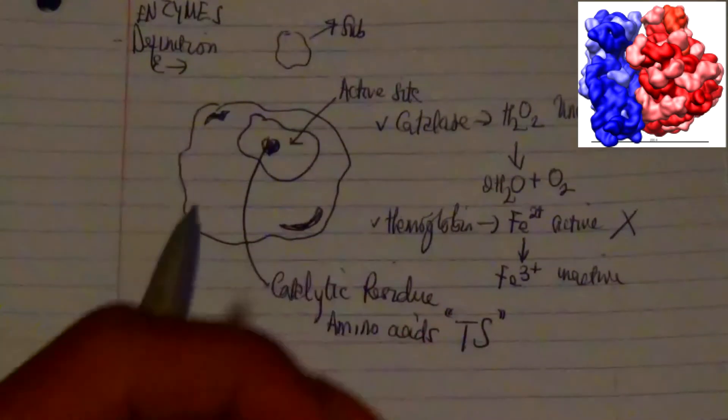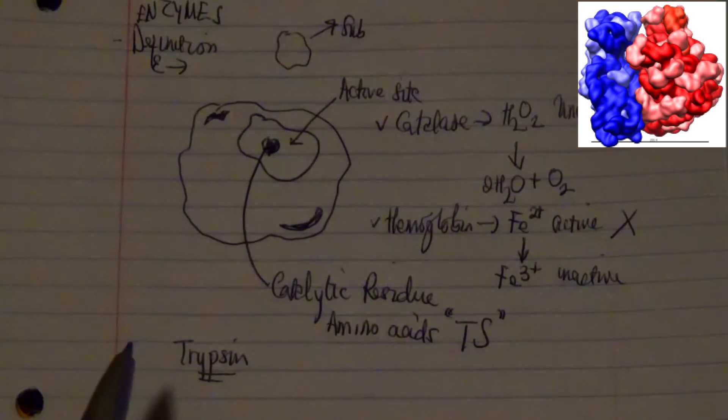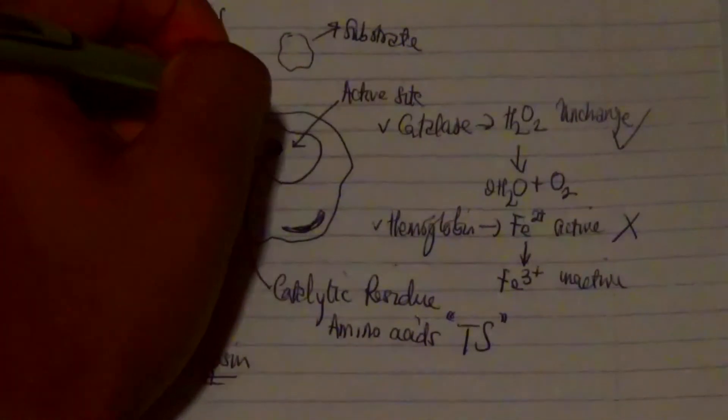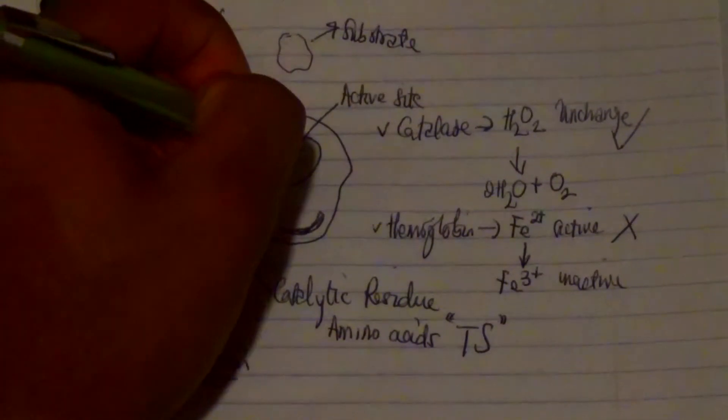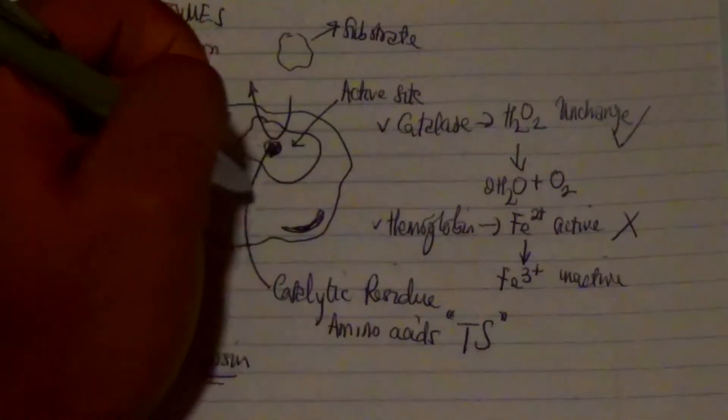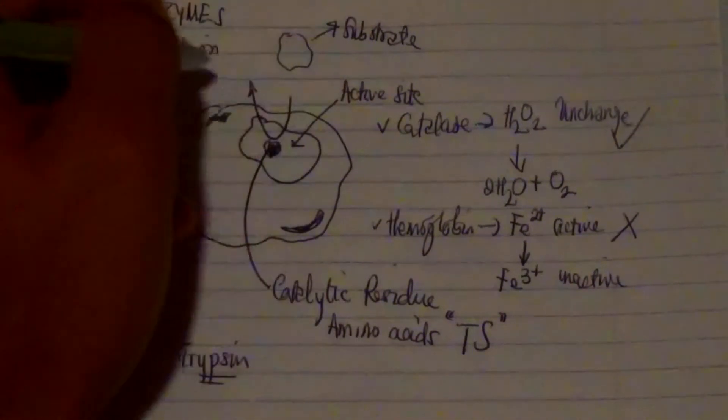So that's about it for the substrate. The product is what comes out after the interaction between this particular substrate and the catalytic residue in the active site.